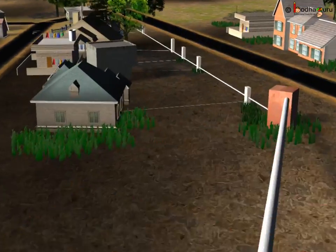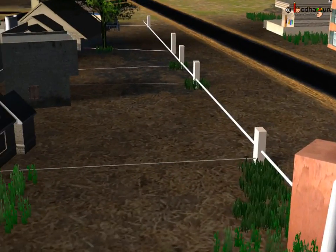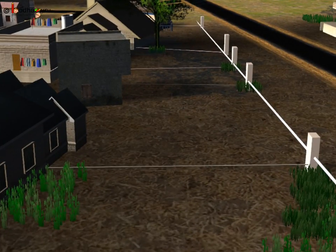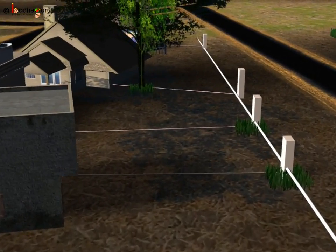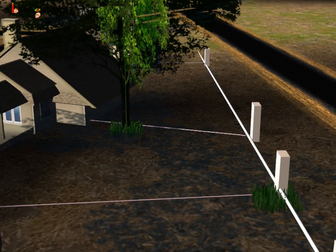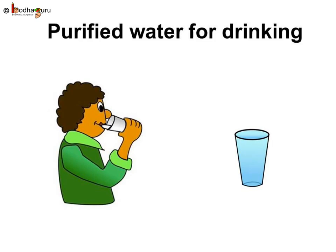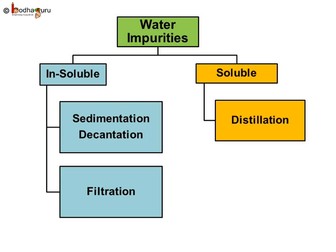The water which is suitable for drinking is called potable water. A lot of work needs to be done before potable water reaches our home. For removing insoluble impurities we can use sedimentation, decantation, and filtration methods. For removing soluble impurities we can use the distillation process.